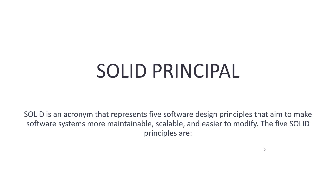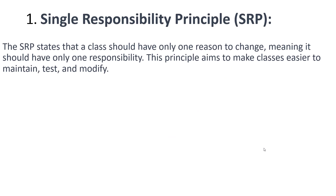The 5 SOLID principles are as follows. The first one is the Single Responsibility Principle. The SRP states that a class should have only one reason to change, meaning it should only have one responsibility. This principle aims to make classes easier to maintain, test, and modify.